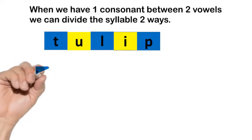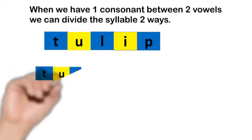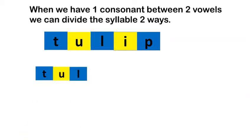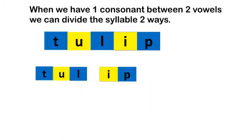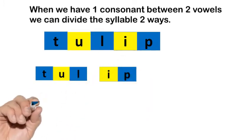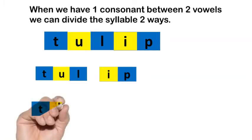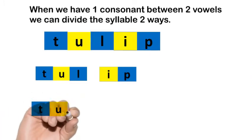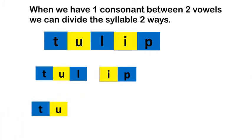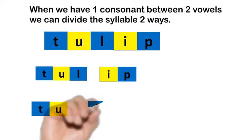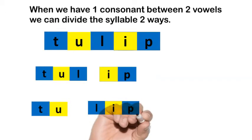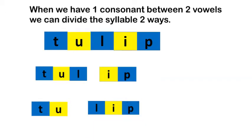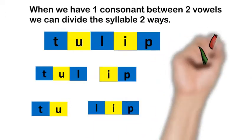We could divide the syllable by keeping the consonant next to the first vowel. If we did that, there would be a closed syllable. In this word, it would be tul, and then we would have ip — tulip. That doesn't sound quite right. Let's try it the other way. Now we have T-U being an open syllable, too. And now we have L-I-P being a closed syllable, lip. Tulip. That sounds right.